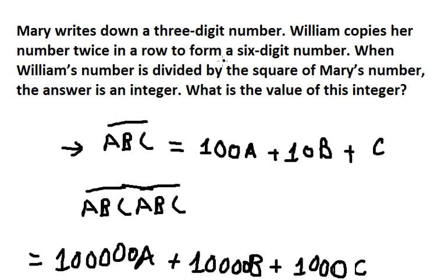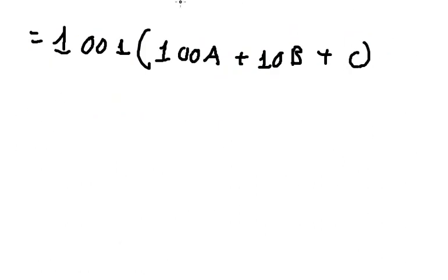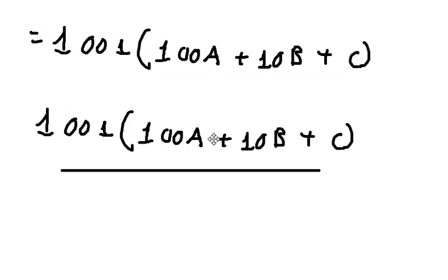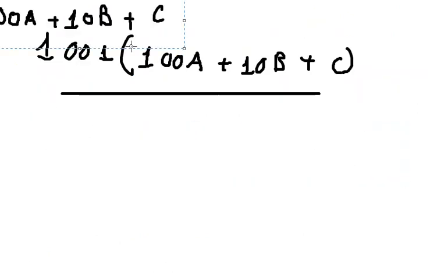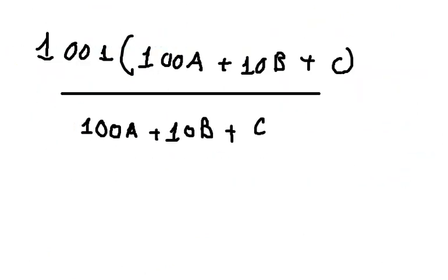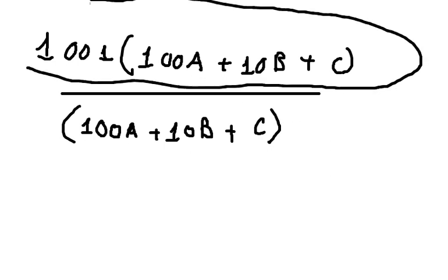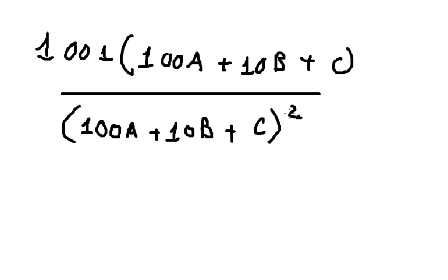William's number is divided by the square of Marie's number and the result is an integer. So William's number looks like this. Here we divide by Marie's number. This is the reason why I needed to do the factorization — so we can simplify.